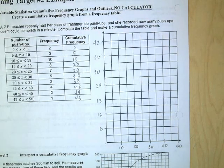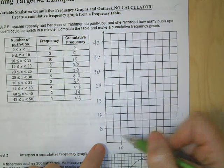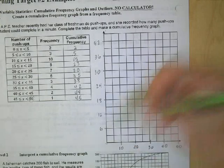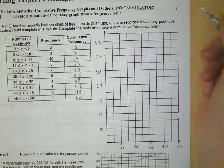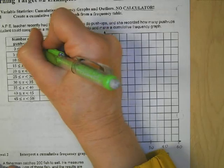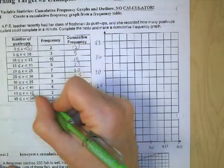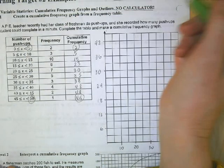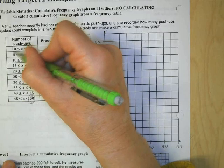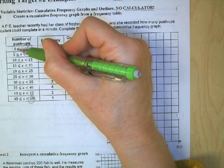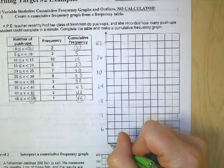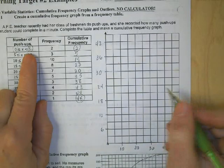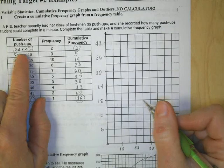You don't want the data cramped down in a tiny area — make sure you figure out a scale that works well for your data. Now we graph the points. The starting point is the minimum: zero push-ups, zero people, so we start at (0, 0).